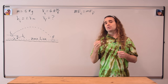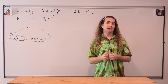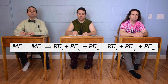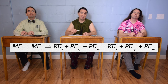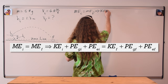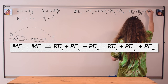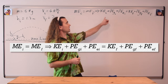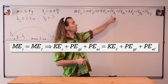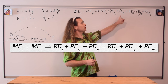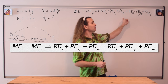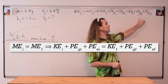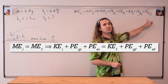Bobby, what are the three different types of mechanical energy? Kinetic energy, gravitational potential energy, and elastic potential energy. We list all of the mechanical energies which could possibly be there: kinetic energy initial plus gravitational potential energy initial plus elastic potential energy initial equals kinetic energy final plus gravitational potential energy final plus elastic potential energy final.